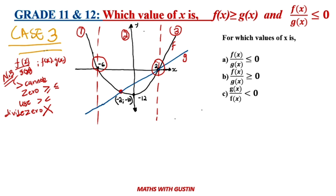Now let's do this and have a look at the first question. Question A is saying: f of x over g of x is less than or equal to zero.